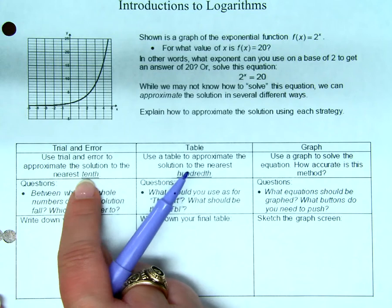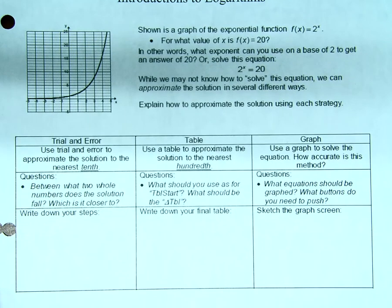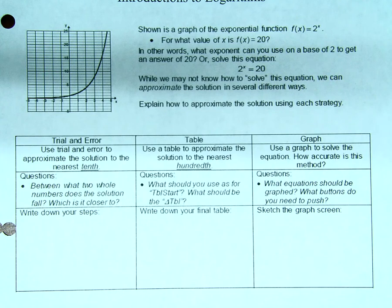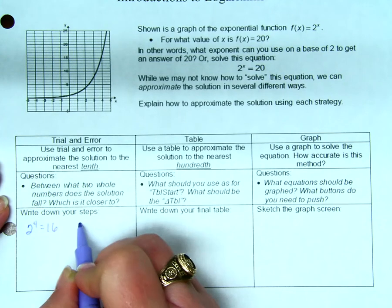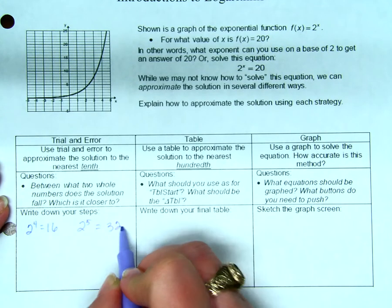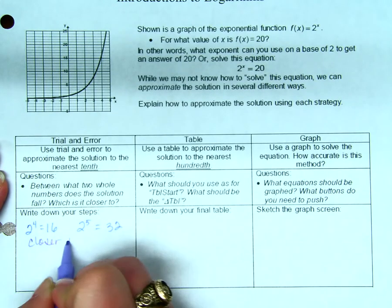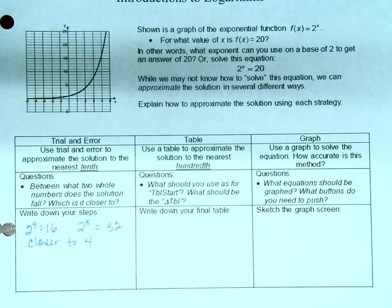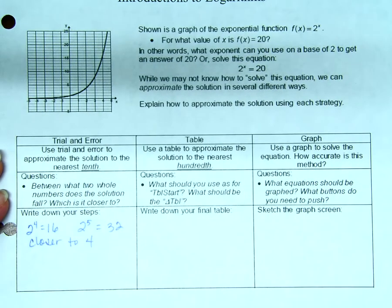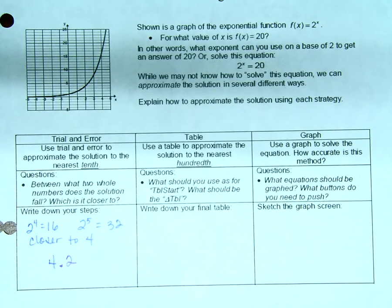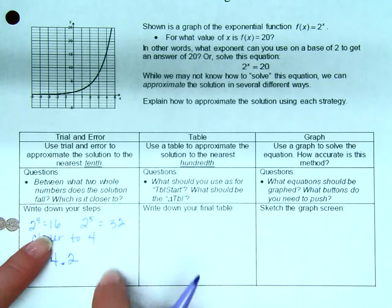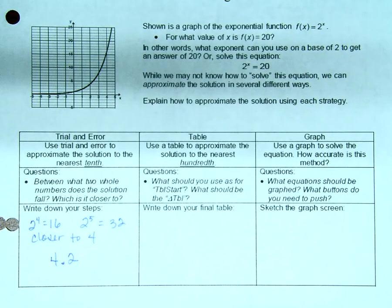Well, do you think we could approximate it to the nearest tenth? First of all, between what two whole numbers do you think it is? 2 to what power is 20? 4 and 5, because 2 to the fourth power is what? And 2 to the fifth power is what? 32. Now, do you think it's going to be closer to 4 or closer to 5? Why is it going to be closer to 4? 20 is closer to 16 than it is to 32, right? So, if we're guessing to the nearest tenth, what do you think it's going to be? 4 point what? 4 point 2? Okay, that's our guess. How did we come up with that guess? Well, we knew it was between 4 and 5 and we know it's closer to 4, so we said 4 point 2. Just a guess, right?